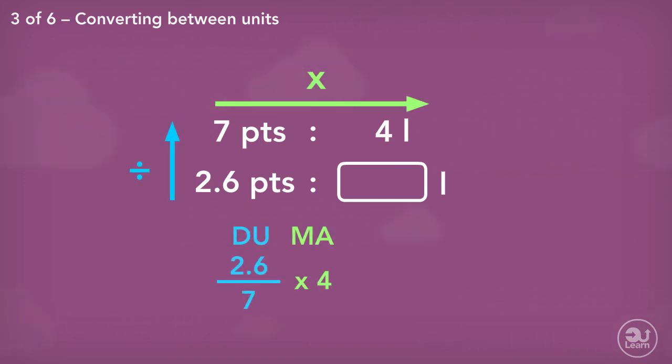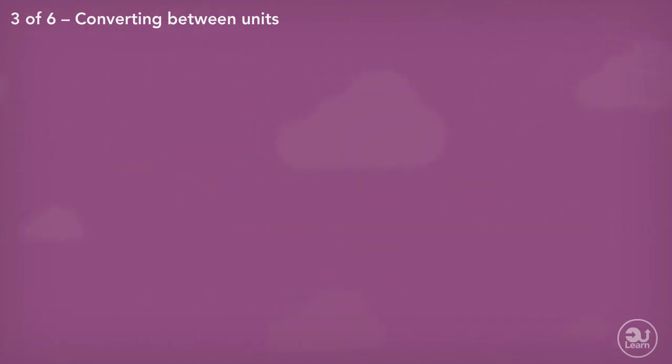Divide up, multiply across. We know that 2.6 pints is approximately equal to 1.49 litres. We also know that there is 100 centilitres in a litre. We lay out our information like before.